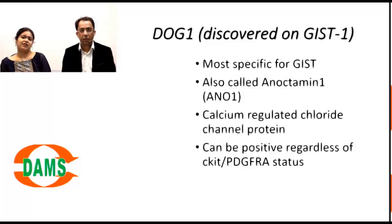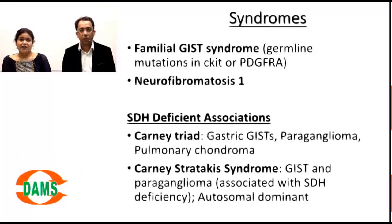A newer marker, DOG1 (Discovered On GIST), is considered the most specific marker for GIST. It is a calcium-regulated chloride channel protein also called anoctamin, and it is positive regardless of c-kit or PDGFRA mutation status, making it highly specific.